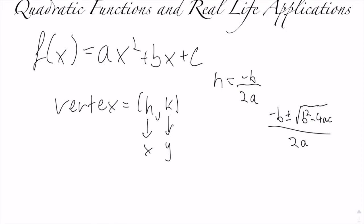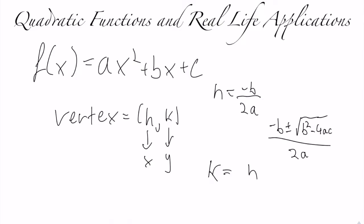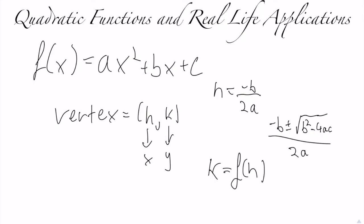However, in this video I will not be going into how the h value is derived. Furthermore, to find the k value — which is either the minimum or the maximum value of the parabola, depending on whether a, the coefficient of x squared, is negative or positive — it can be found by placing h into the function f, or the function at hand.